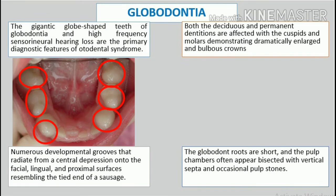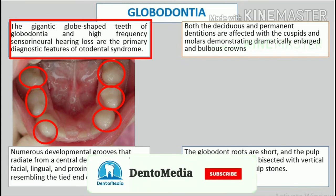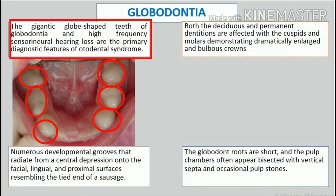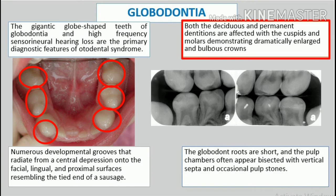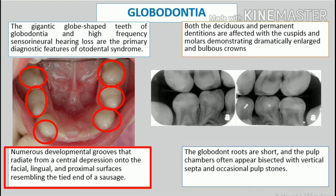Globodontia. The gigantic globe-shaped teeth of globodontia and high-frequency sensorineural hearing loss are the primary diagnostic features of otodental syndrome. Both the deciduous and permanent dentitions are affected, with the cuspids and molars demonstrating dramatically enlarged and bulbous crowns. The normal cusp and groove anatomy of the molars is replaced by numerous developmental grooves that radiate from a central depression.